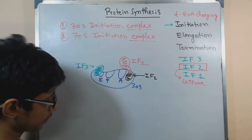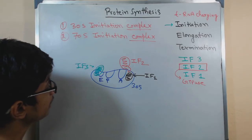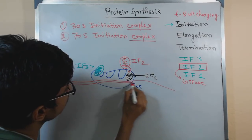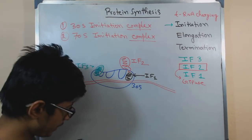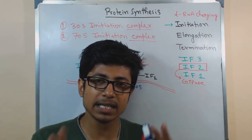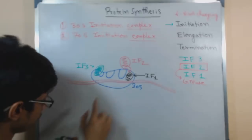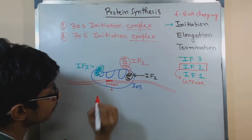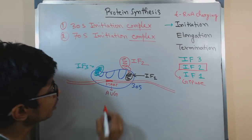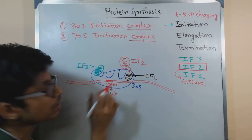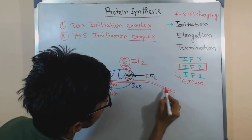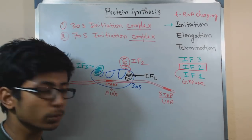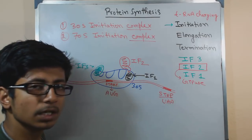Now, the mRNA will come and join with this 30S subunit. In mRNA there are start codon and stop codon positions. In this mRNA, there is a particular section called the start codon, and that particular codon is AUG — in prokaryotes as well as eukaryotes, this 3-nucleotide set acts as a start codon. In a far distant region there is a stop codon; for example UAA. There are 3 types of stop codons found in prokaryotes.